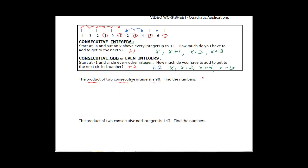So that means that my numbers are going to be X and consecutive would be X plus 1. So if I want the product I'm going to have X times X plus 1 is equal 90.